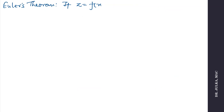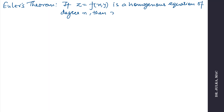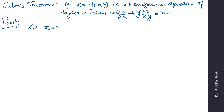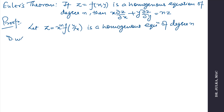Euler's theorem: if z equals f is a homogeneous function of degree n, then x·(∂z/∂x) + y·(∂z/∂y) equals nz. Now we will prove this theorem. Let z equals x^n · f(y/x) be the homogeneous equation of degree n. First we differentiate with respect to x, treating y as constant, and we use the product rule here.